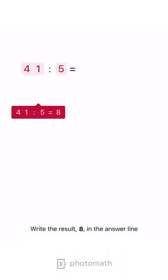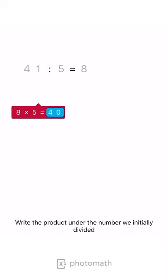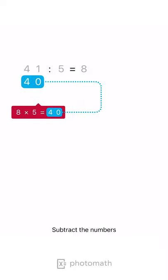Write the result, 8, in the answer line. Multiply that result by 5. Write the product under the number we initially divided. Subtract the numbers.